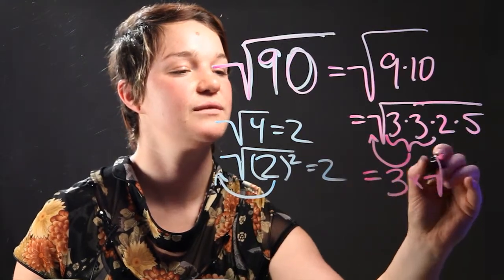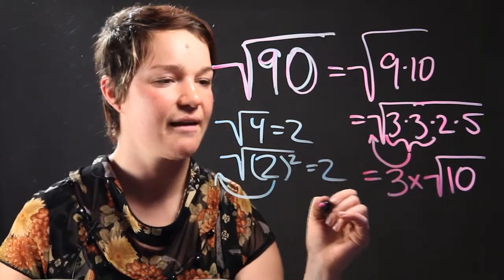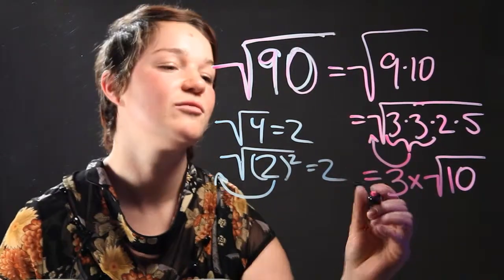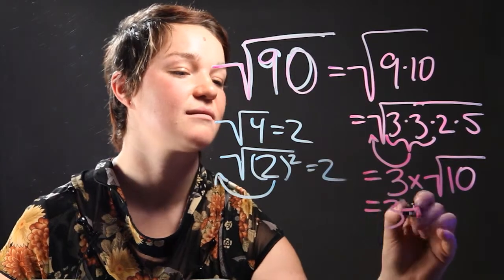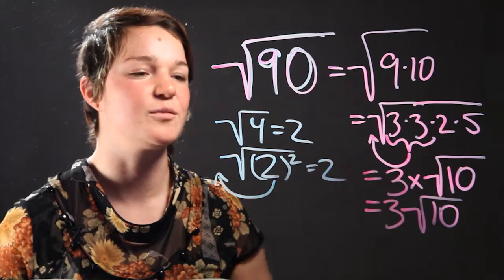So that's the radical of 2 times 5, which is 10. And just to make it a little bit more simple, it's the same as saying 3 radical 10. You don't have to put that sign there for multiplication.